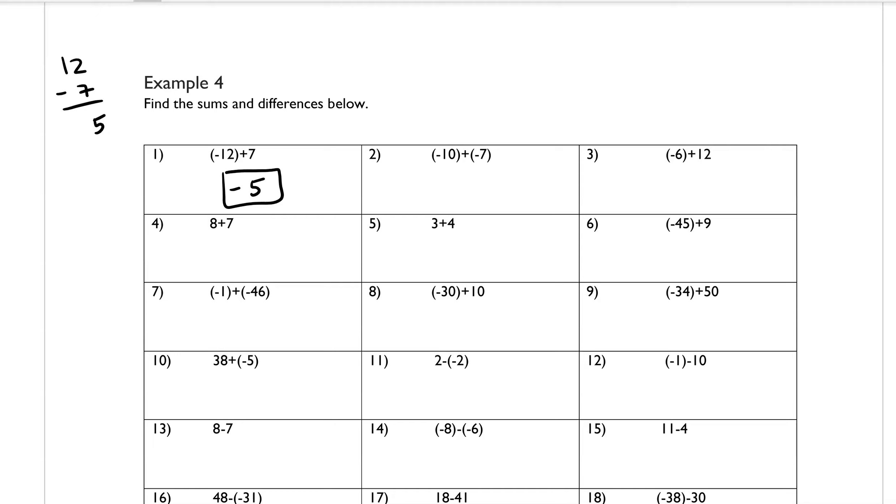Okay, for the second example, it says negative 10 plus negative 7. Since both of these are negative, we're just going to add them. So 10 plus 7 is 17. And since both of them are negative, our final answer is going to be negative.